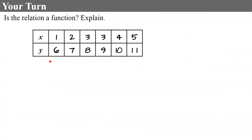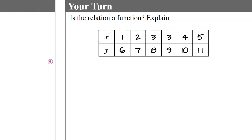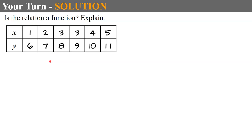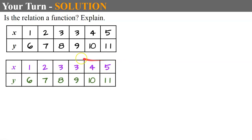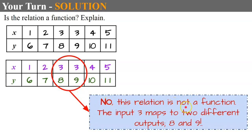Here's a table of values — it's a relation, but you need to determine if it's a function. Pause and come back when you're ready. Welcome back. Looking at all our inputs: 1, 2, 3, 3, 4, 5 — I instantly see that I have two X values, two inputs that are the same. The input 3 has an output of 8 and an output of 9. Therefore, no, this relation is not a function. The input 3 maps to two different outputs, 8 and 9. If I graphed this, the points 3,8 and 3,9 would fail the vertical line test because the vertical line would pass through both points.